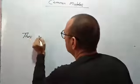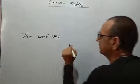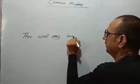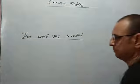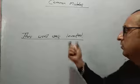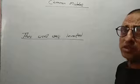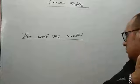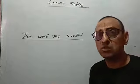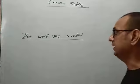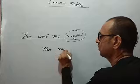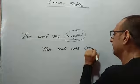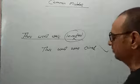Let's see the next expression. 'This word was invented' — what is the mistake here? If a technology or thing is discovered, we use 'invented,' or if something already exists and we find it, we use 'discover.' But when a new word is coined, we use 'coined' instead of 'invented.' So the correct sentence is: 'This word was coined.' I hope you have got it.